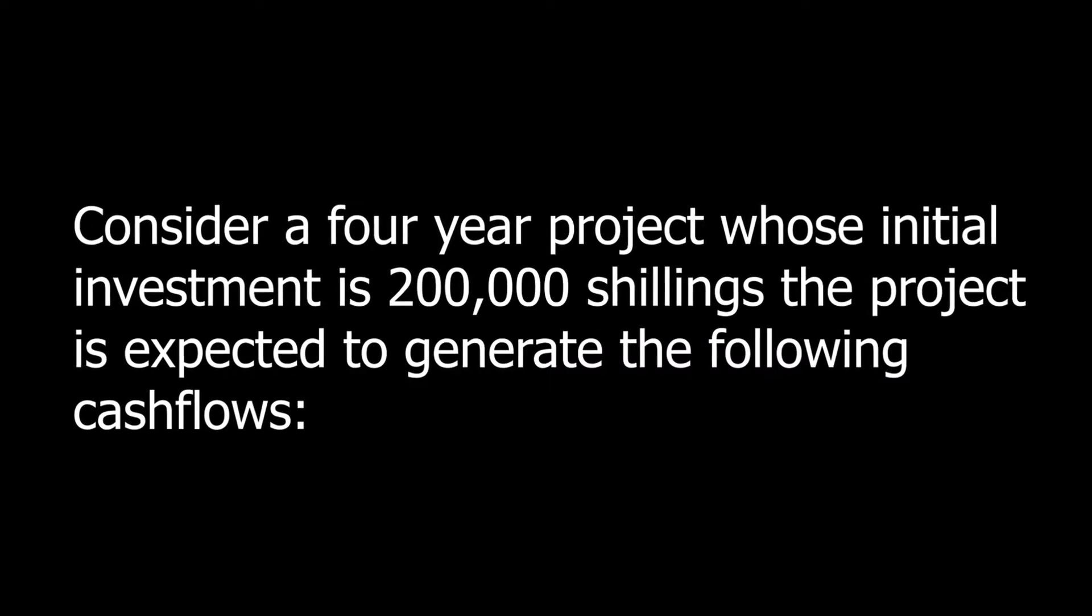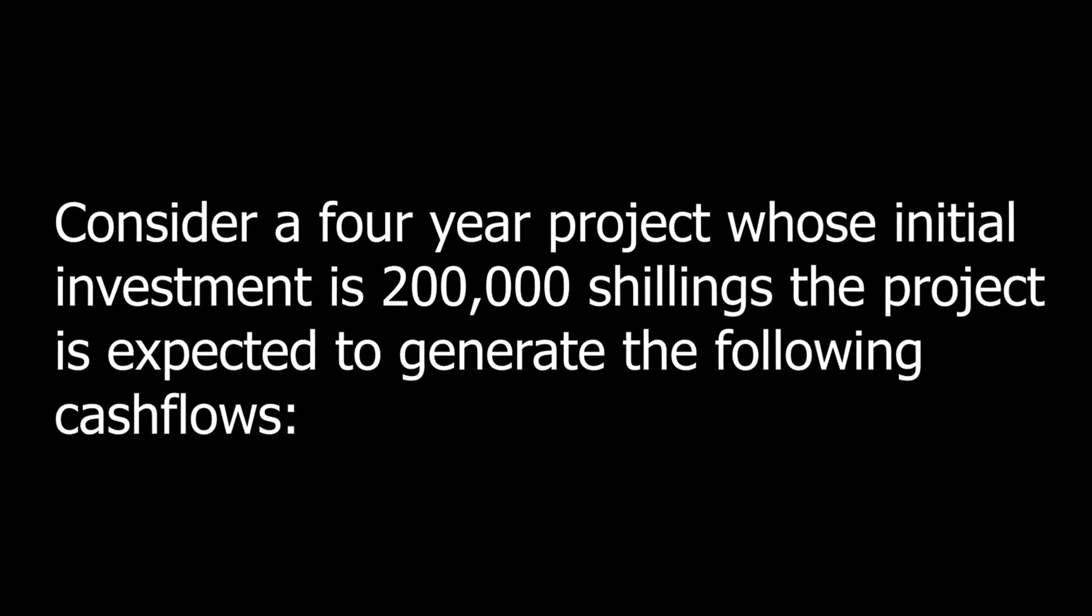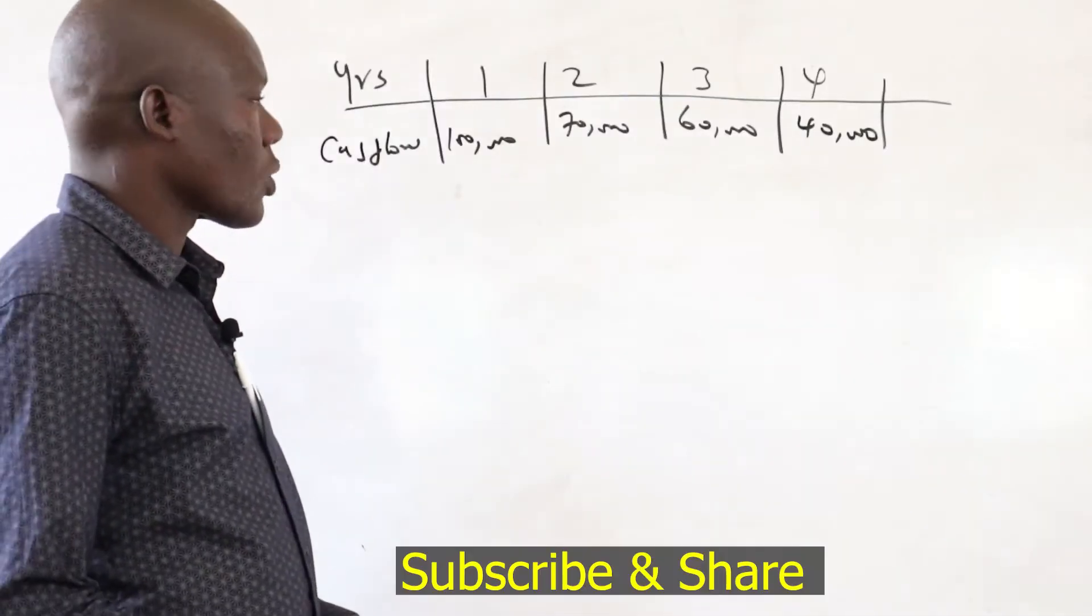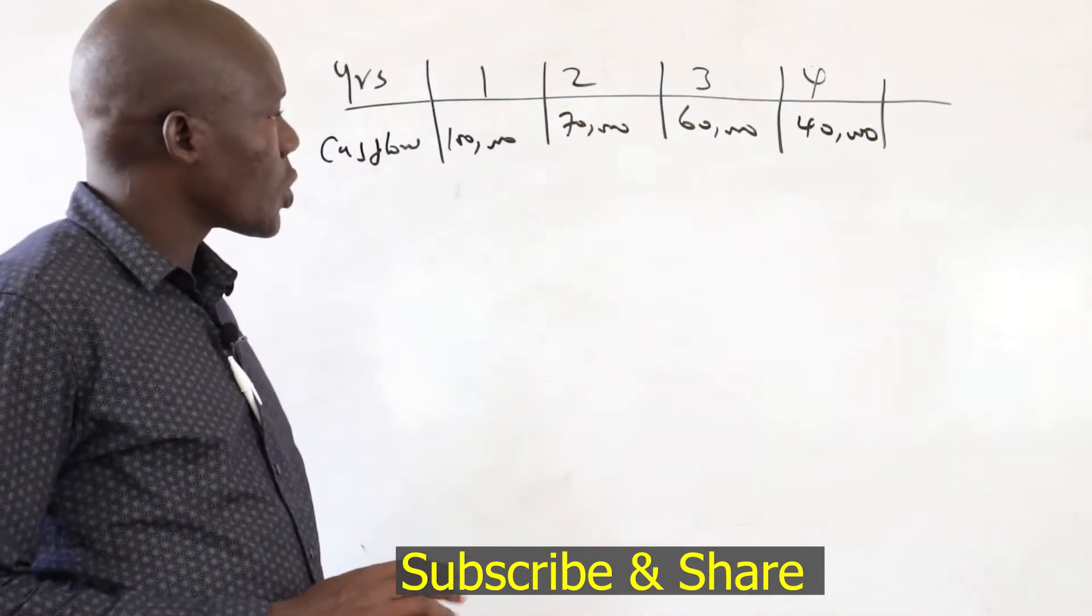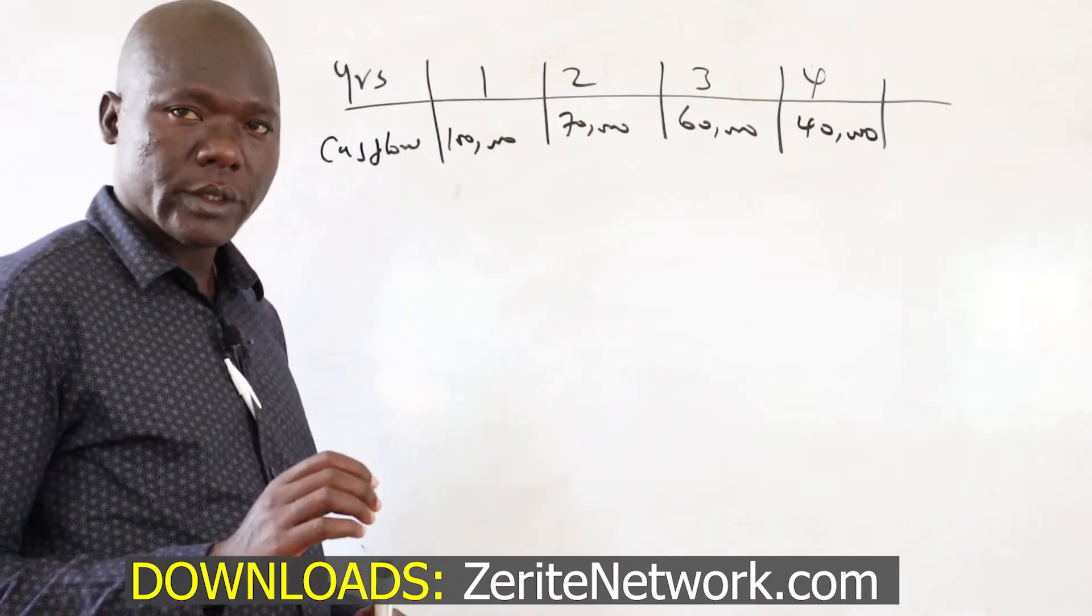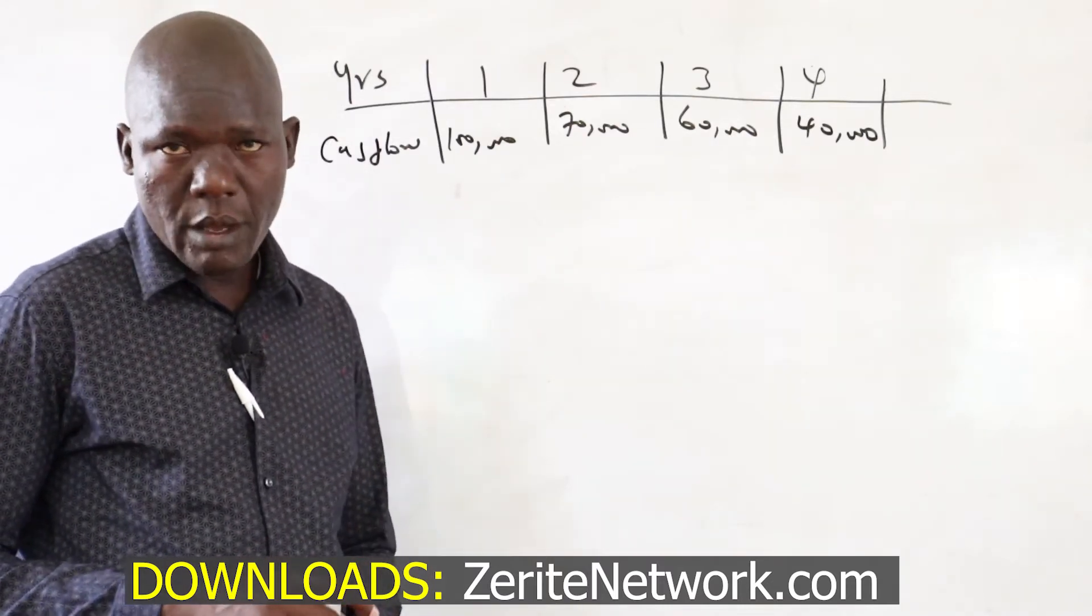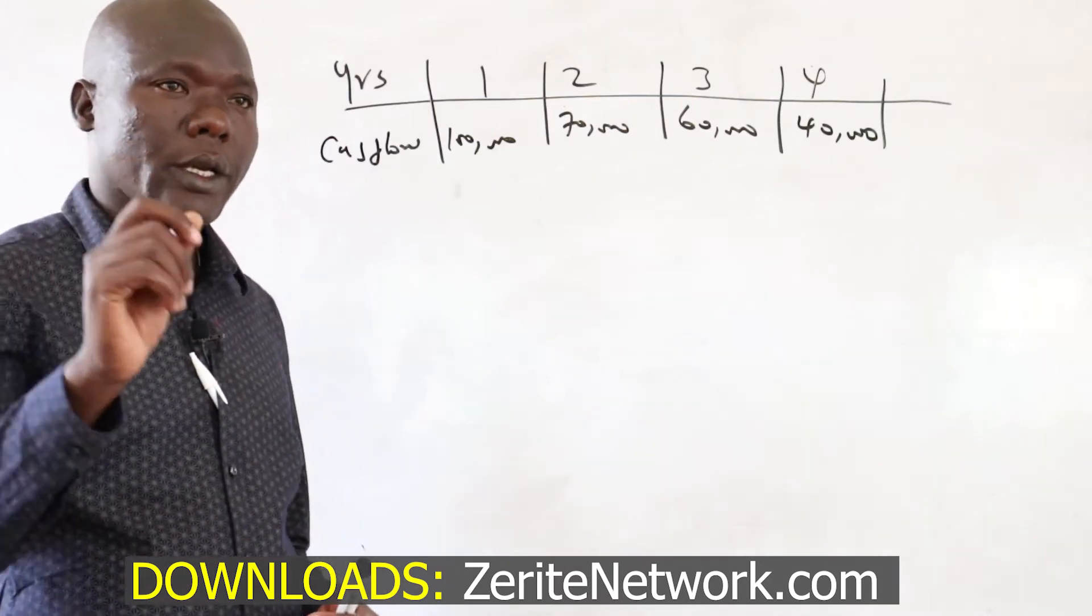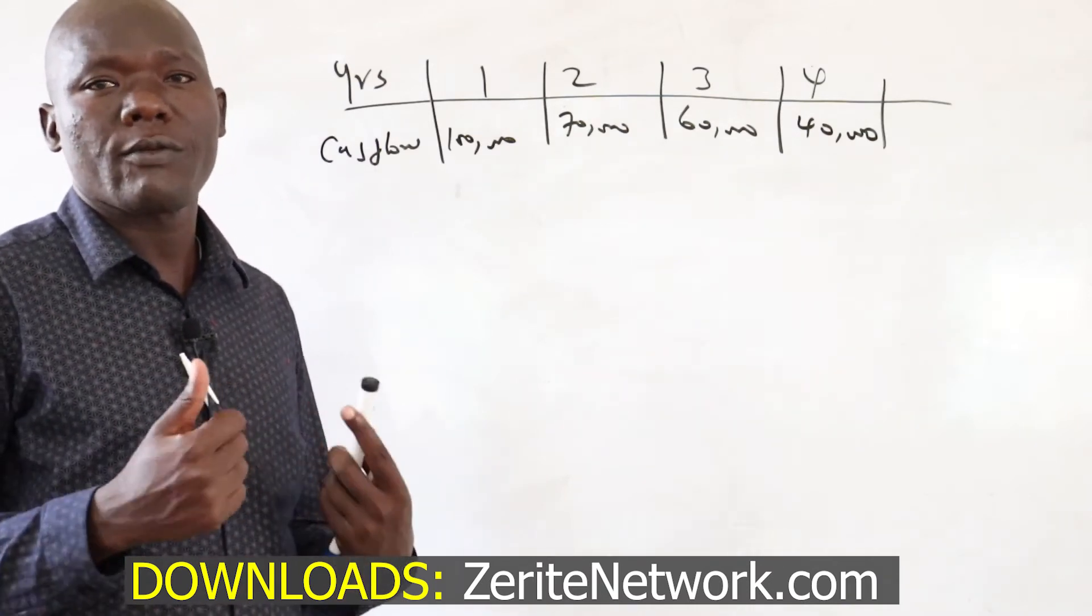Consider a four-year project whose initial investment is 200,000 shillings. The project is expected to generate the following cash flows. For period one, it's 100,000. For period two, it's 70,000. For period three, 60,000. And lastly, period four is 40,000. But we invested 200,000. So now we want to check after how long can we recoup this amount back before the fourth period.